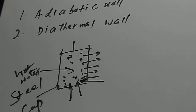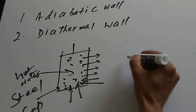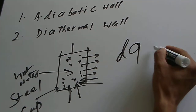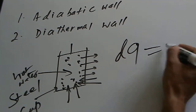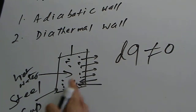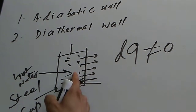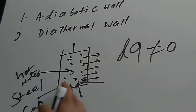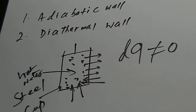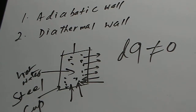This kind of wall is called a diathermal wall. In a diathermal wall, dQ cannot be zero — meaning some heat is going out or some heat is going in. So that's all about thermodynamic walls.